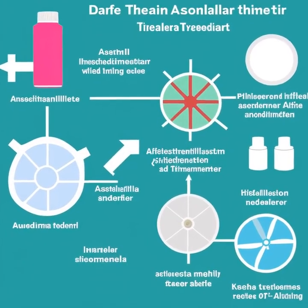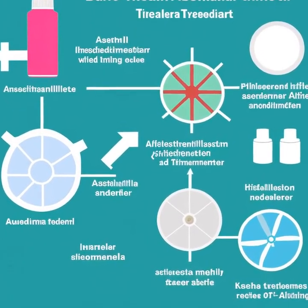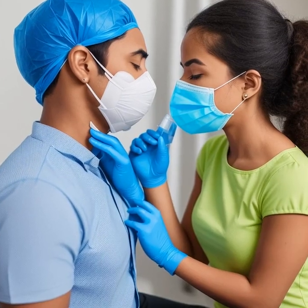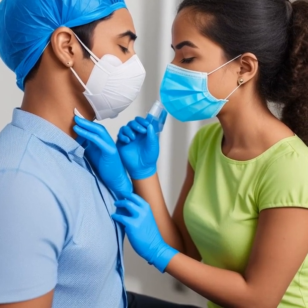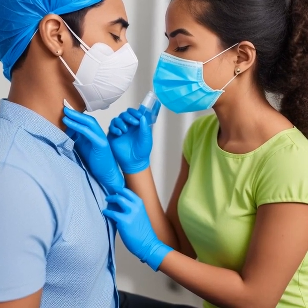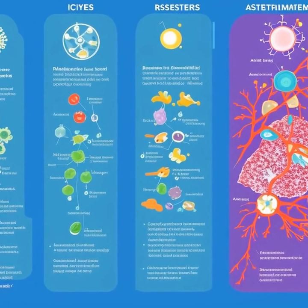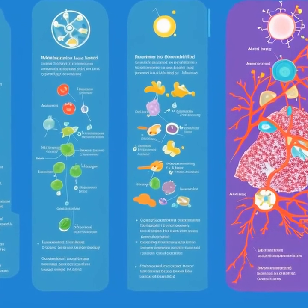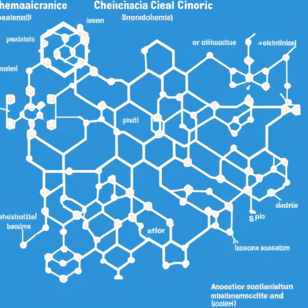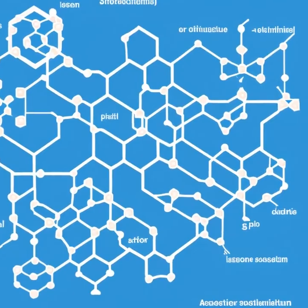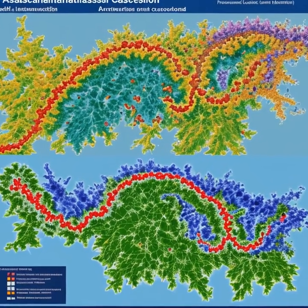The activation of specific signaling pathways is another important aspect of the immune response to asthma. One key pathway is the NF-kappa-B pathway, which regulates the production of inflammatory cytokines and other mediators. Activation of this pathway contributes to the persistent inflammation seen in asthma. Another critical pathway is the JAK-STAT pathway, which is involved in the activation and differentiation of immune cells such as Th2 cells, playing a significant role in promoting inflammation and asthma.